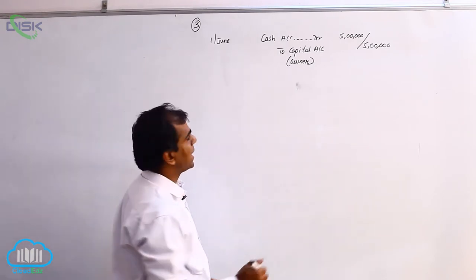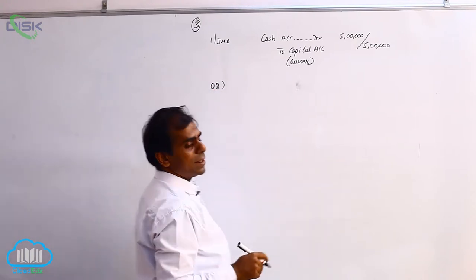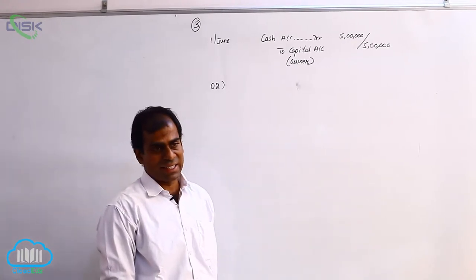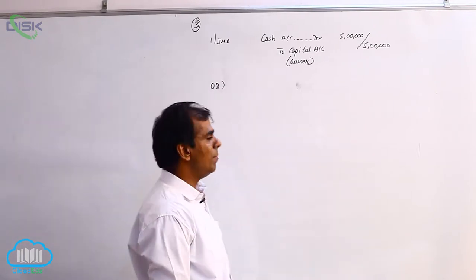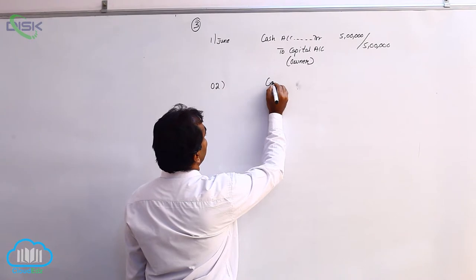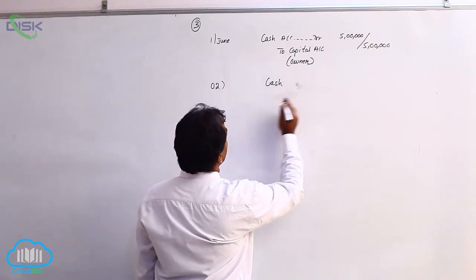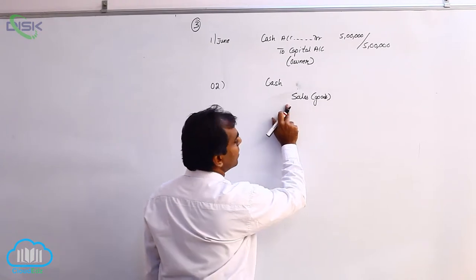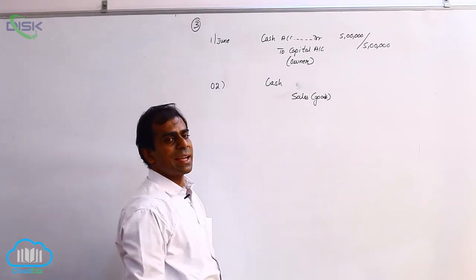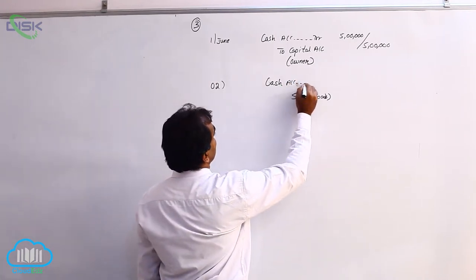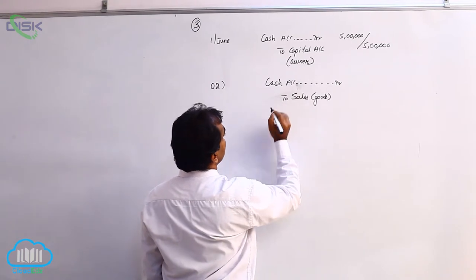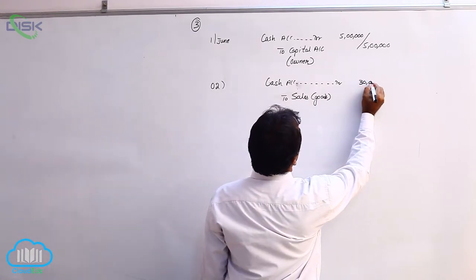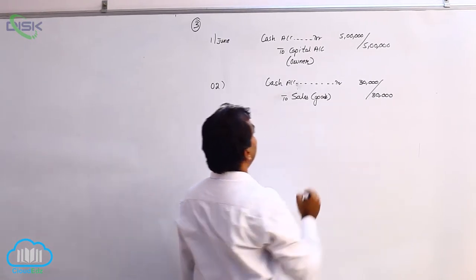The next transaction is on the 2nd and it says simply sales. The word simply sales means the goods are sold for cash, as there is no scope for credit unless stated. When you sell goods for cash, cash comes in and goods go out. Goods are represented by the word sales. Real account rule: debit what comes in, so cash account debit. Goods are also real account going out, so we credit sales. The amount is 30,000. Narration: being goods sold for cash.